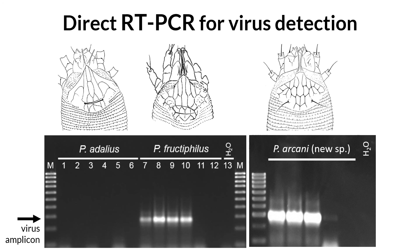What's even more intriguing, we found a completely new eriophyte species in samples collected in Arkansas, Kentucky, and Michigan, and we named it Phyllocoptes arcani — with the Latin meaning of arcani being 'hidden' or 'secret.' Phyllocoptes arcani shows 22% divergence in the CO1 marker to the Phyllocoptes fructiphilus lineage used in rose rosette transmission experiments. It is also morphologically distinct from fructiphilus, and its full description was published this year.